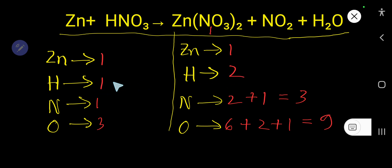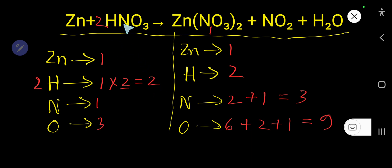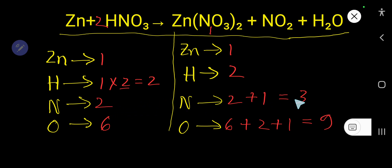Let us balance hydrogen first. On the right side we have 2 hydrogen in water, and on the left side we have 1, so multiply water by 2 to get 2. The coefficient 2 must be placed before the H₂O. So we now have 2 hydrogen balanced, and updating gives us 2 nitrogen and 6 oxygen from that term.